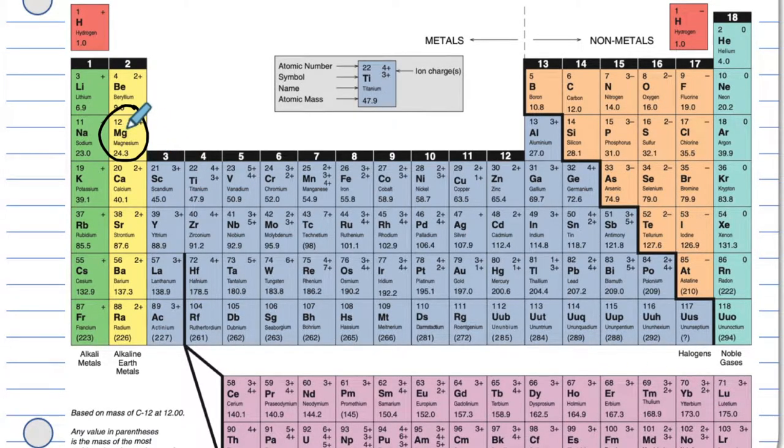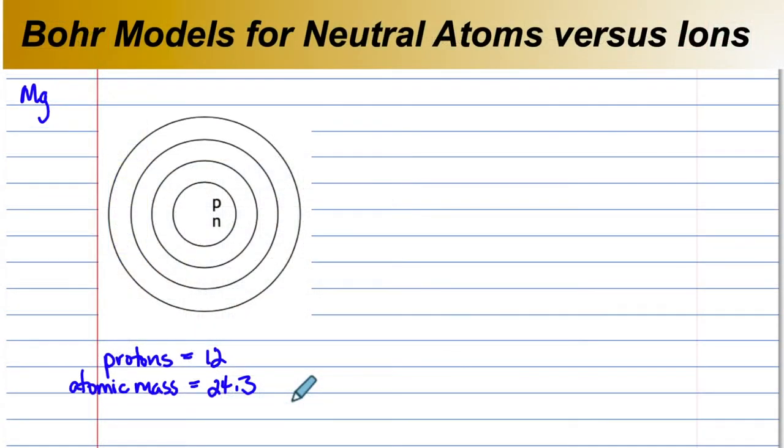It has 12 protons and an atomic mass of 24.3. Therefore, the number of neutrons would be 24 subtract 12, which happens to be 12. Inside the nucleus, we have 12 protons and 12 neutrons.